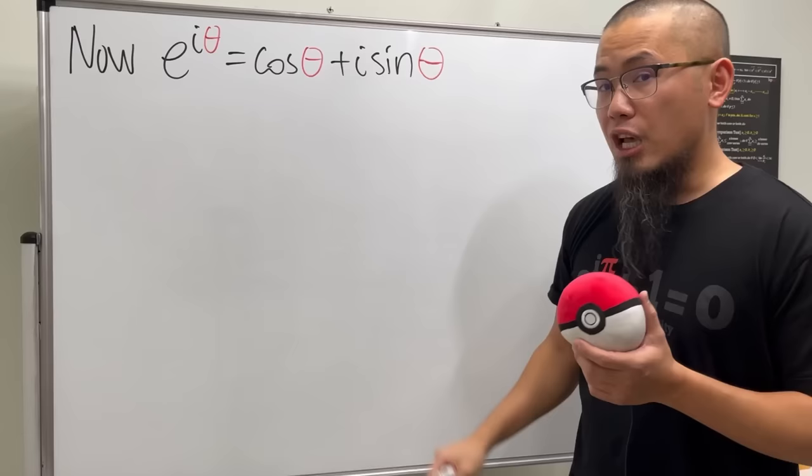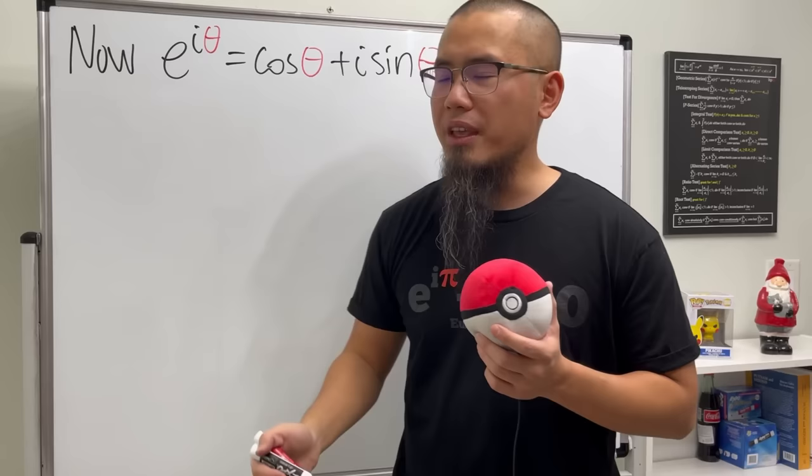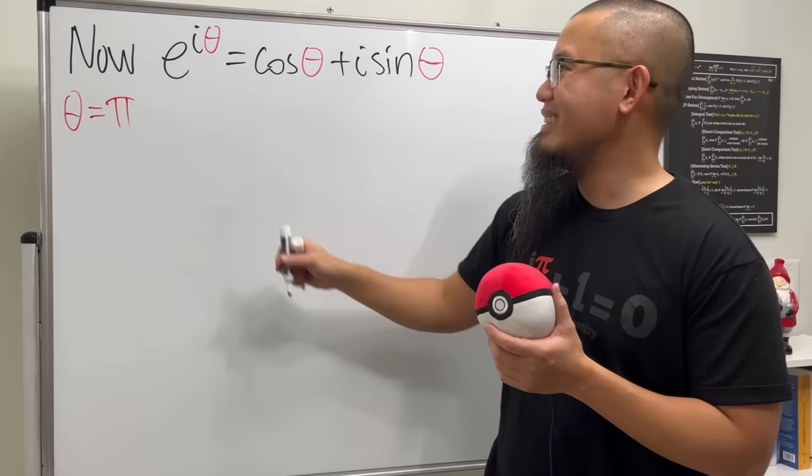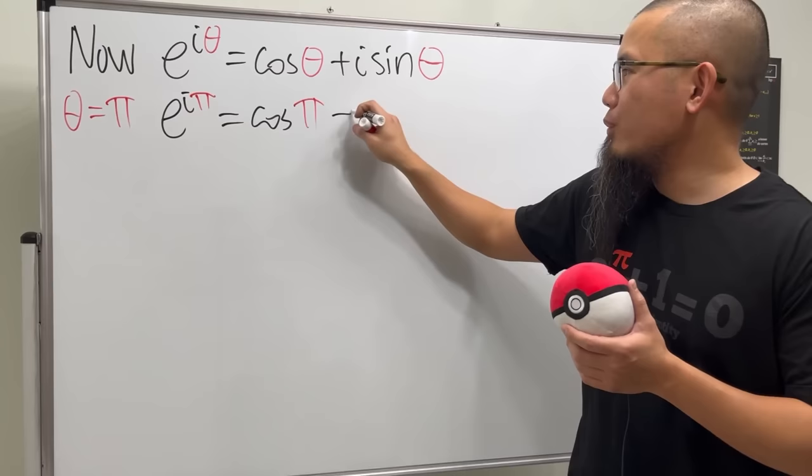So, now this is what we have. e to the i theta is equal to cosine theta plus i sine theta. And you see, we are going to plug in pi into theta. So, let's put that down. We let theta equal to pi, and this is the reason why we use theta, because it represents the angle. And we will get e to the i pi being equal to cosine pi, and then we add it with i times sine pi. Have a look.